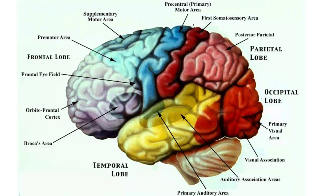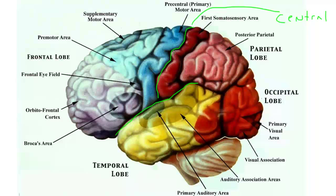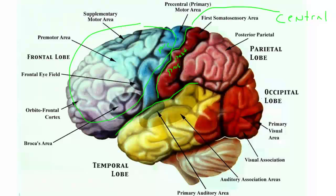Two major sulci to think about: the first one is called the central sulcus, and it divides not only the gyri — these large sections — so this is the post-central gyrus and this is the pre-central gyrus. Not only does the central sulcus divide gyri, it also separates the frontal lobe from the parietal lobe.